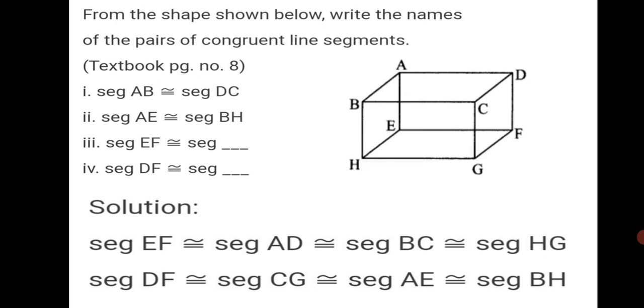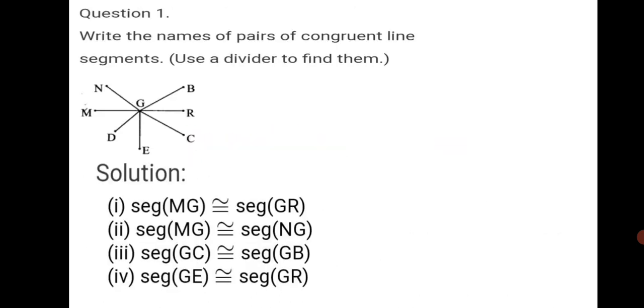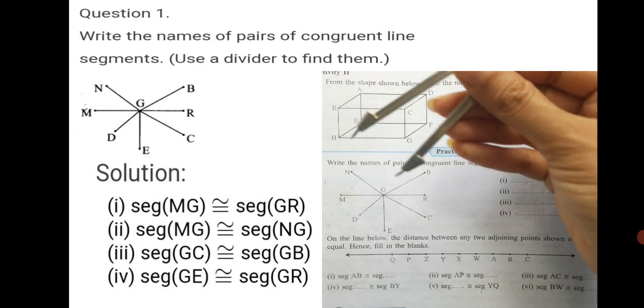Now let us begin with our practice set 6. Question number 1. Write the names of pairs of congruent line segments. Use a divider to find them. We don't have to use a scale - with a divider, which has got pointer on both ends, we will use a divider from your compass box to measure and then accordingly we will write the solution. Four answers are already given here of congruent line segments.